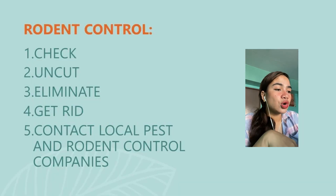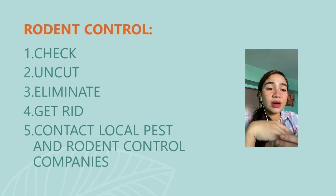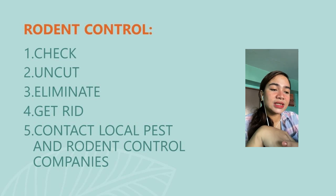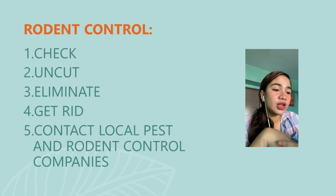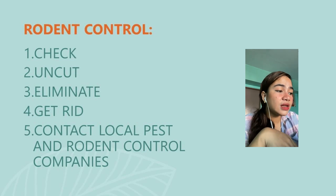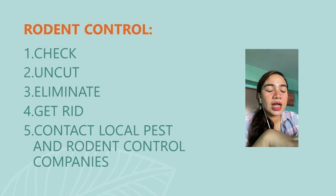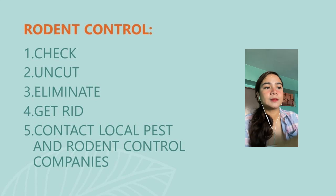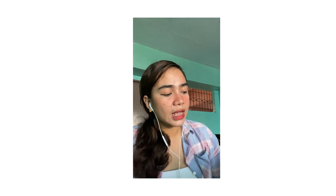Rodent control. Effective rodent control begins with a building and grounds that will not provide a source of food, shelter, and breeding areas. The grounds around the food establishment should be free of litter, waste, refuse, uncut weeds, and grass. Equipment, boxes, crates, and other materials should be neatly stored to eliminate places where pests might hide. Get rid of all materials that may provide food and shelter to these animals. In an event that rodents are out of control, it would be ideal to contact local pest and rodent control companies. That's it for our Module 5 in THC12. Study well for our final examination. Thank you and God bless.